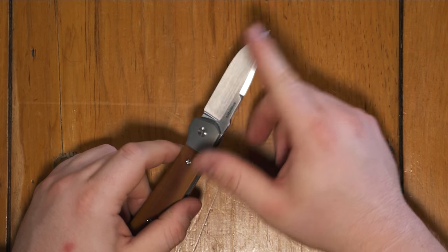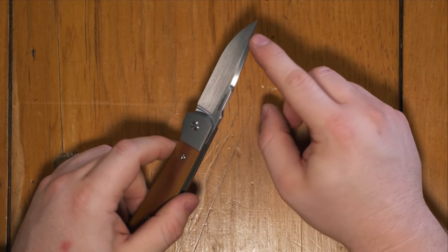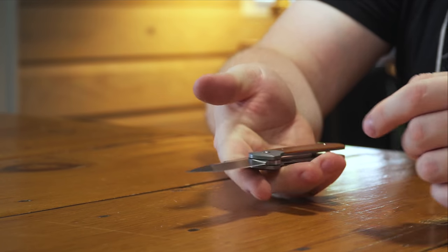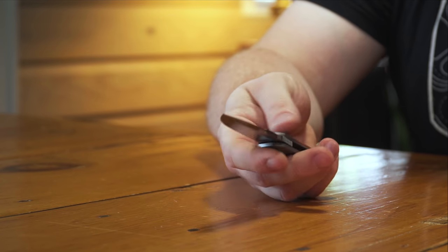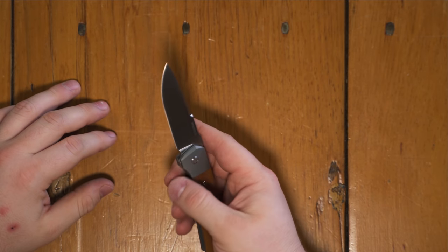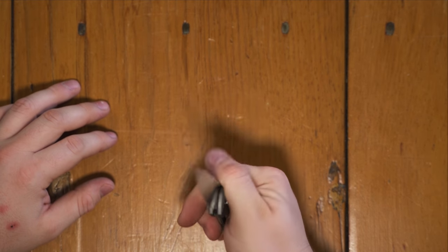It's a flat grind with a hand satin finish on this one as well. Really big swedge up here, which I tend to like. Again, just kind of the pinnacle of modern, traditional love, love, love Pena designs. But more specifically, the Moolah, really, really big fan of this knife.